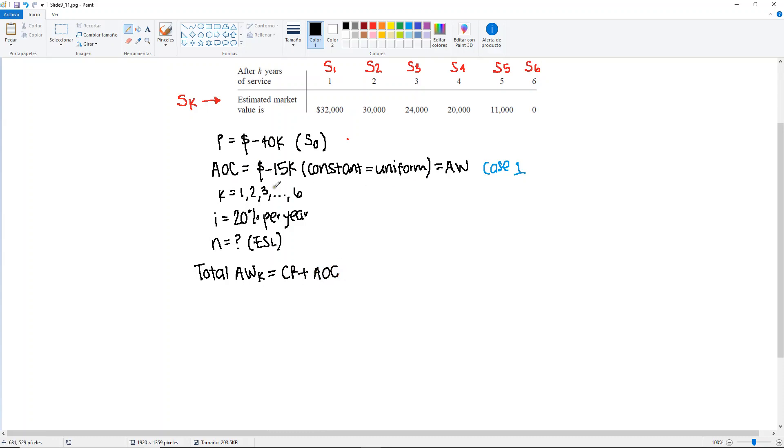Because it's the same, the annual worth of AOC. And if I expand, the capital recovery is composed of the present converted to A for an interest rate at year K, plus the salvage value in that year converted to A as well.